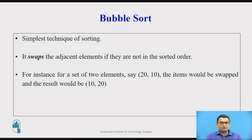Now when we speak about bubble sort, it is the most simple technique of sorting as long as implementation is concerned. It performs sorting by swapping the adjacent elements if they are not in the sorted order. For instance, if we have two elements in the order 20 and 10, where 20 is the first among the two, the items would be swapped and the result would be 10, 20 after sorting since they are adjacent elements and they are swapped.